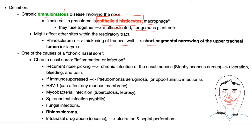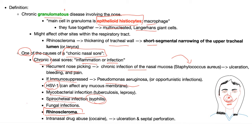One of the causes of chronic nasal sore is rhinoscleroma. Chronic nasal sore is inflammation or infection for a long period of time. Causes include recurrent nose picking; if immunosuppressed, it's Pseudomonas aeruginosa; if immunocompetent, it's usually Staph aureus; Herpes simplex virus 1; mycobacterial infection; syphilis, which damages your nose significantly; rhinoscleroma, which is a granuloma; and intranasal drug abuse such as cocaine. Cocaine can cause epistaxis and septal perforation. Septal perforation can also be caused by syphilis and granulomatosis with polyangiitis, also known as Wegener's.